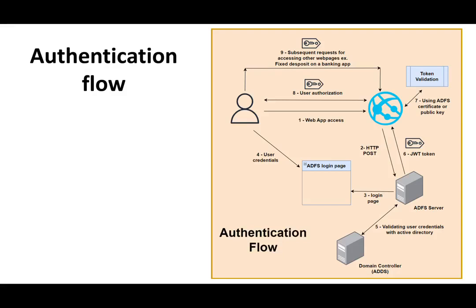The user's credentials are sent to the ADFS server. In step five, since you've already configured the communication between the ADFS server and your domain controller — your Active Directory — the ADFS server validates the user credentials against Active Directory. If successful, a JWT token is generated containing the user's identity information.